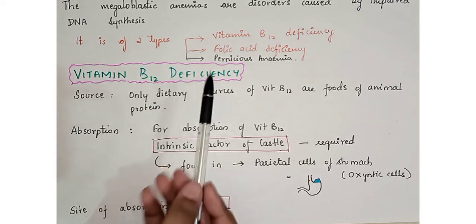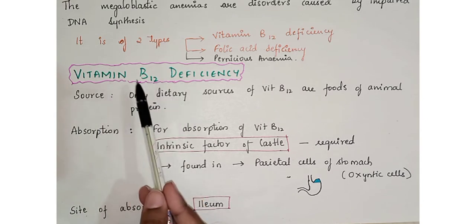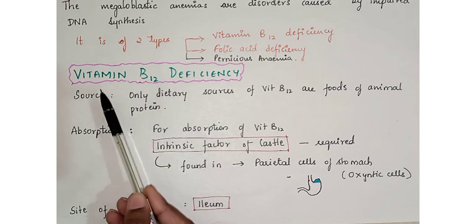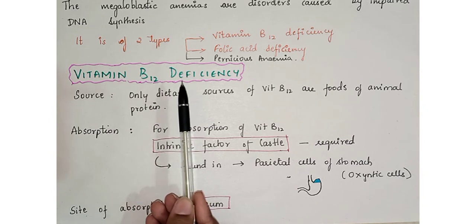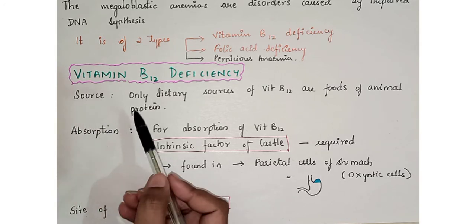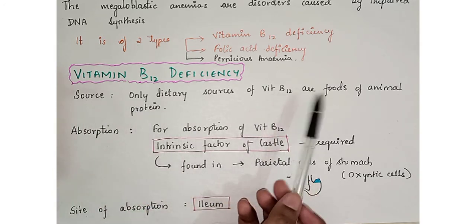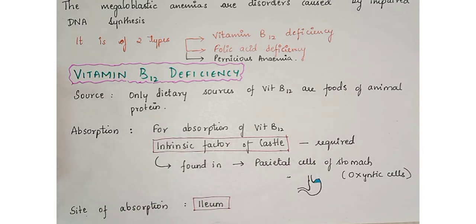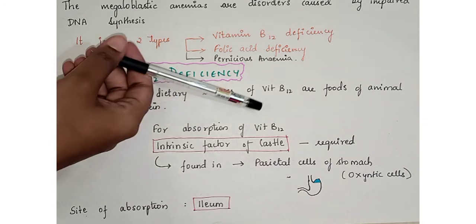In Vitamin B12 deficiency, the name itself suggests that Vitamin B12 is deficient, leading to anemia. The only dietary sources of Vitamin B12 are foods of animal protein, such as liver, meats, cheese, and other animal products. Therefore, vegetarians are at greater risk of Vitamin B12 deficiency.